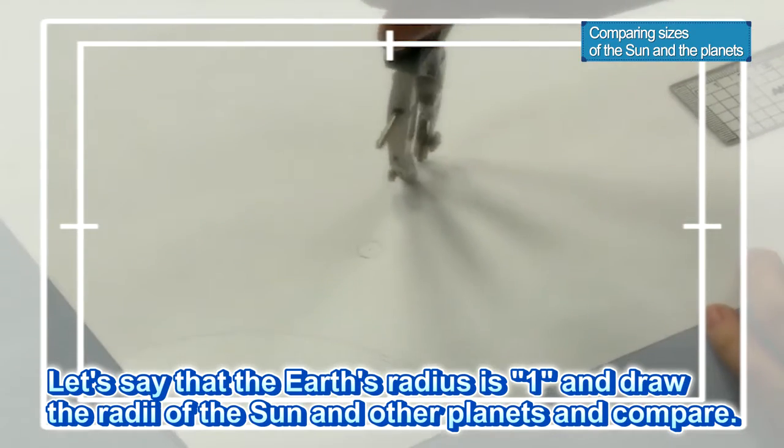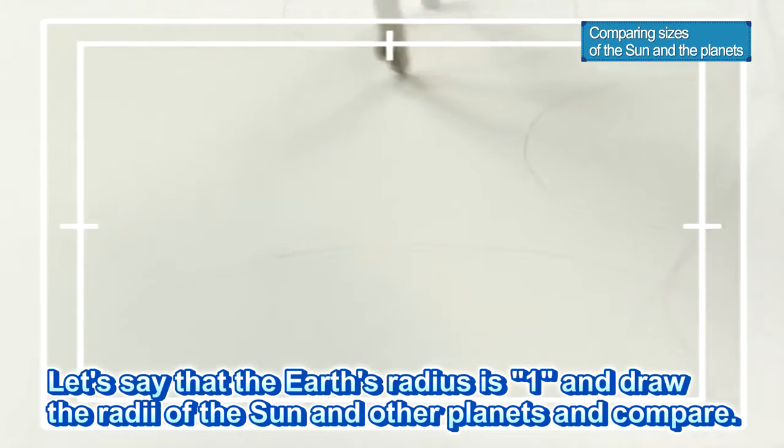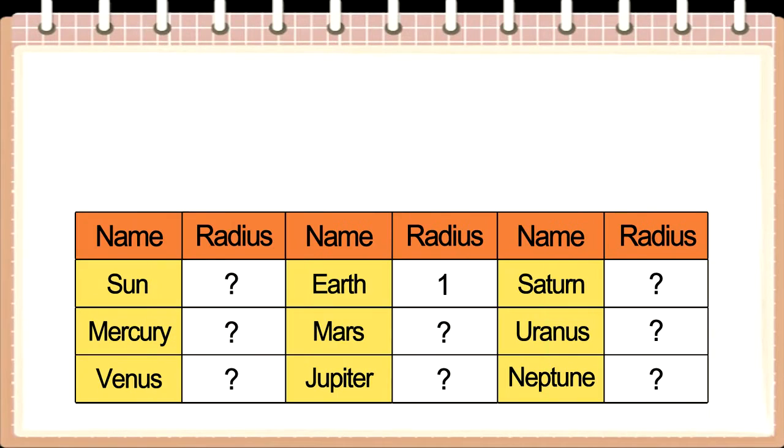Let's say that the Earth's radius is 1 and let's draw the radii of the Sun and other planets in comparison. Let's say the Earth's radius is 1 and calculate the radii of the Sun and other planets.